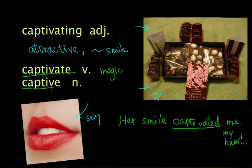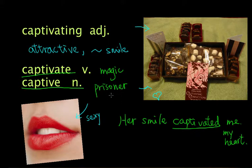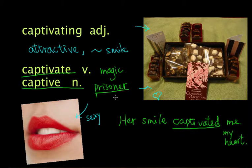And of course, it comes from this word called captive. A captive is usually a prisoner or someone who is caught. For example, someone who is caught in a war, or an animal that is caught is also a captive. So if you are a prisoner of love, or a prisoner of attraction, then you are captivated by love, you are captivated by that person.